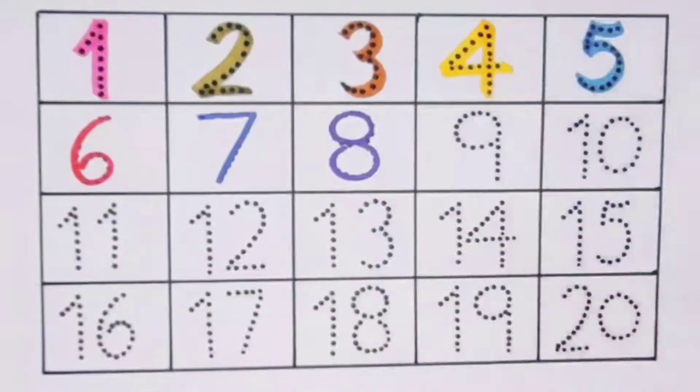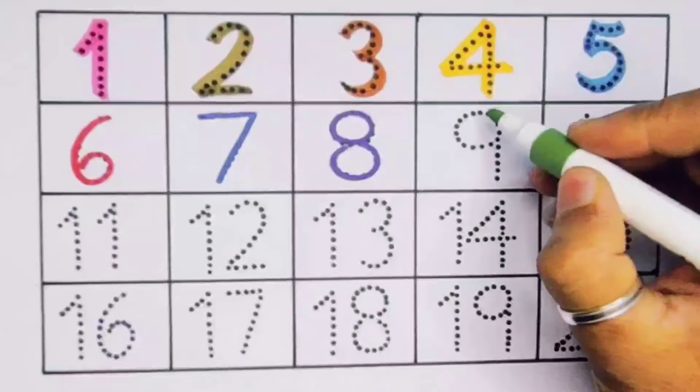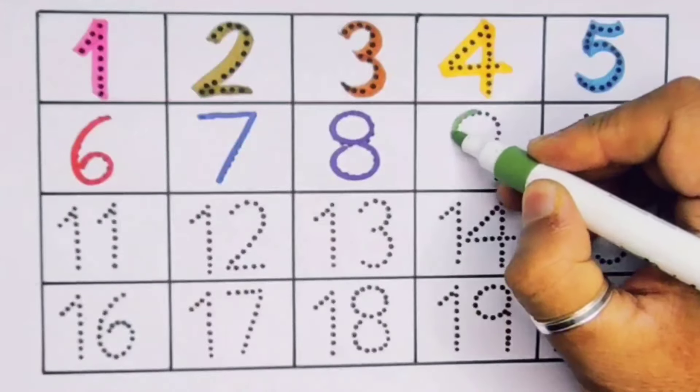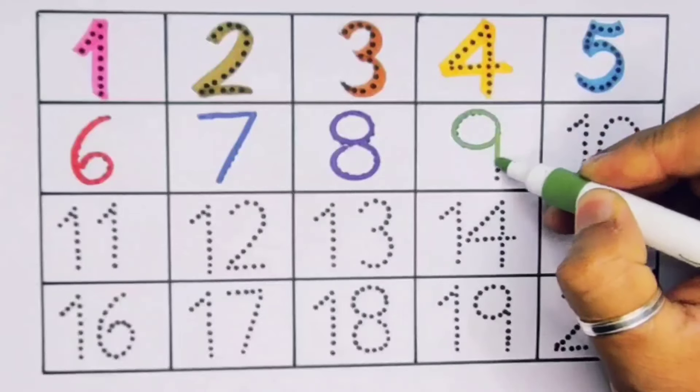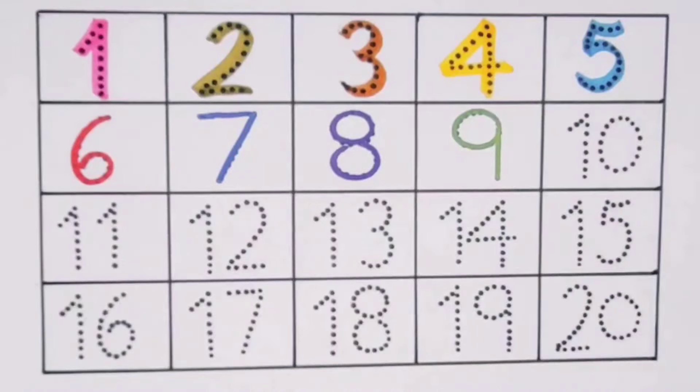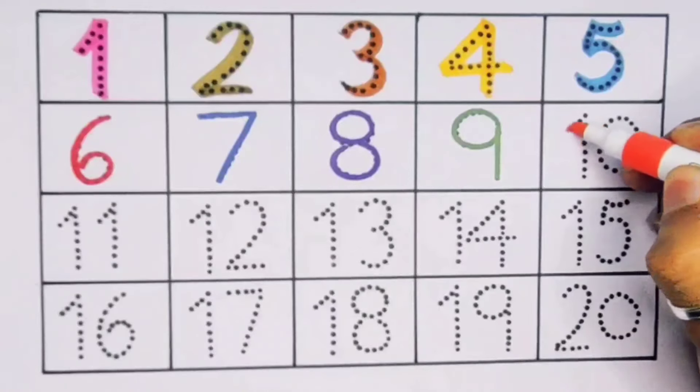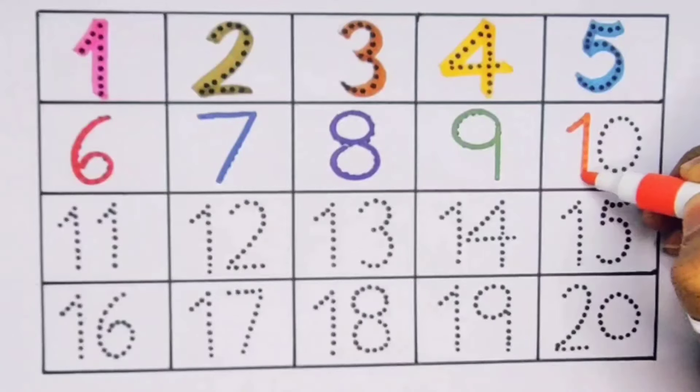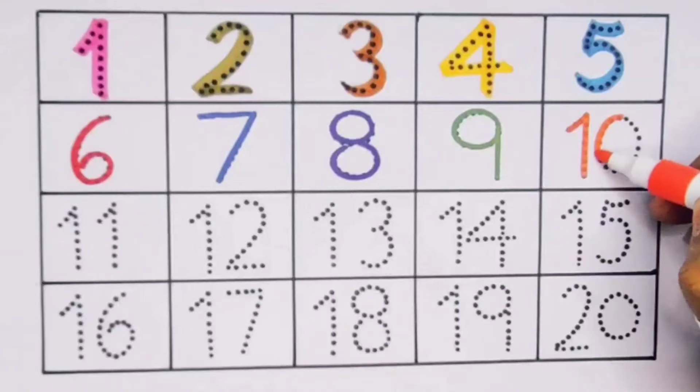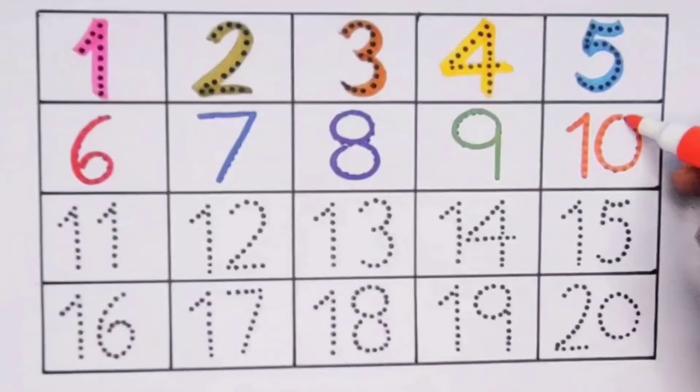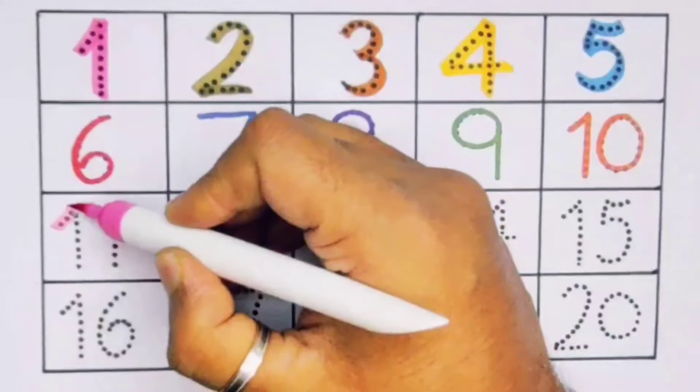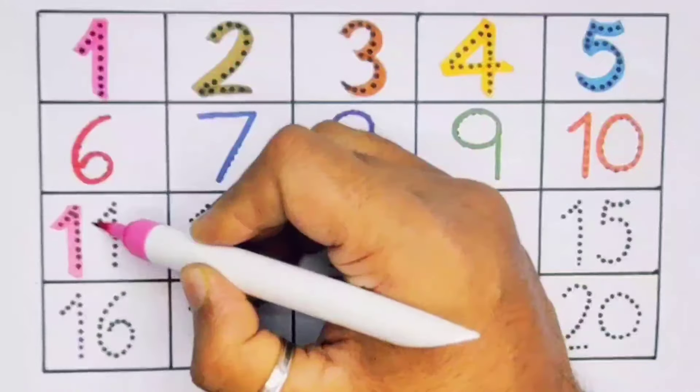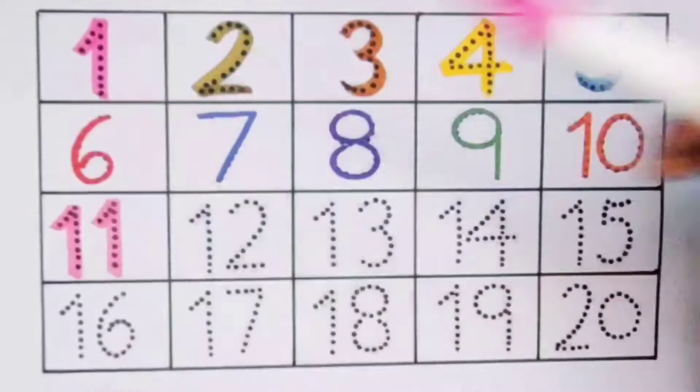Next nine, number nine. Next ten, one zero, ten, number ten. Next eleven, one one, eleven.